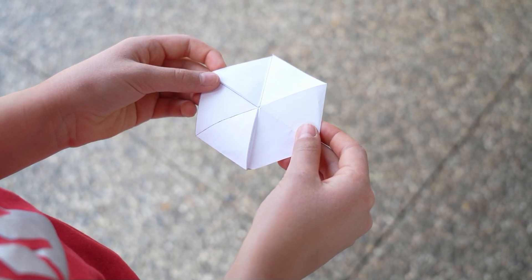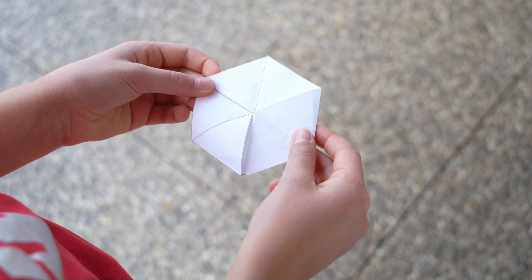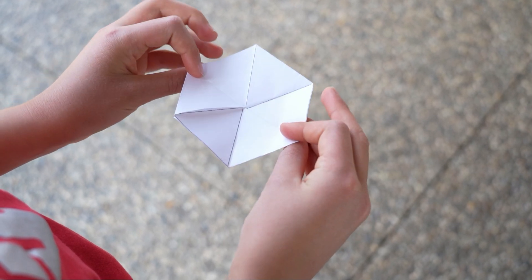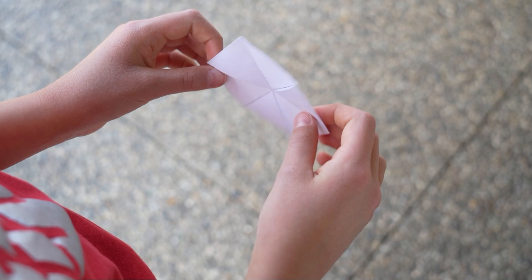At first, a hexaflexagon may just look like a piece of paper folded into the shape of a regular hexagon. But there's a twist, or should we say a flex.